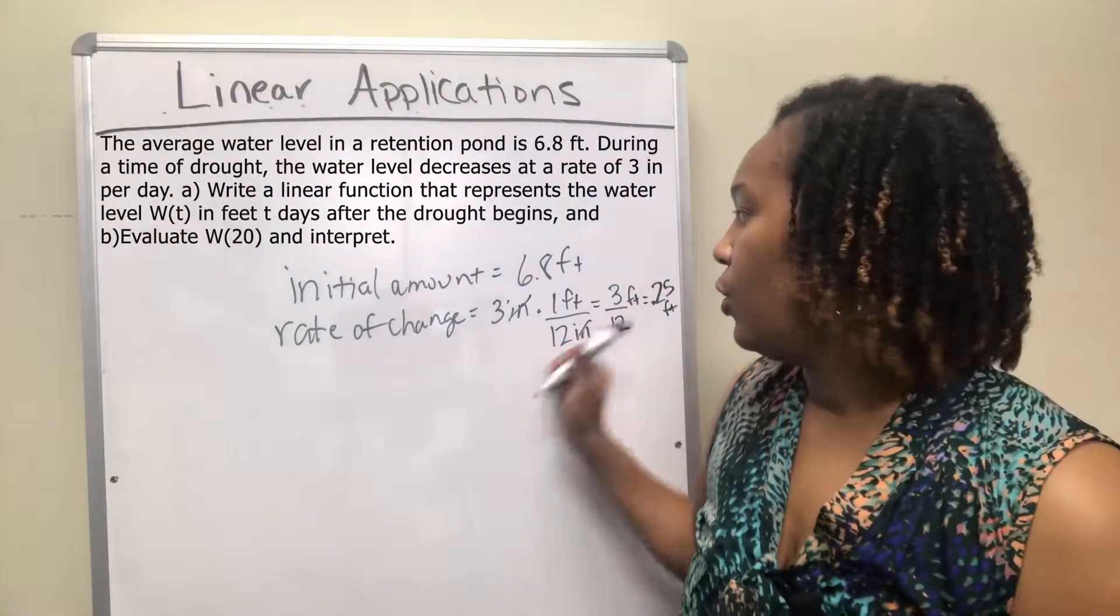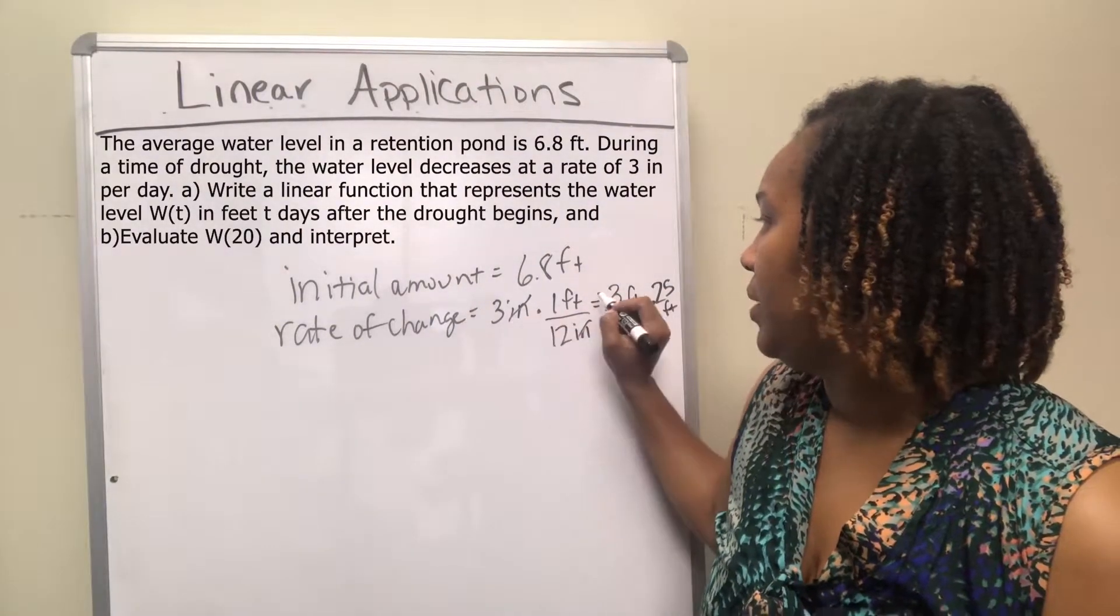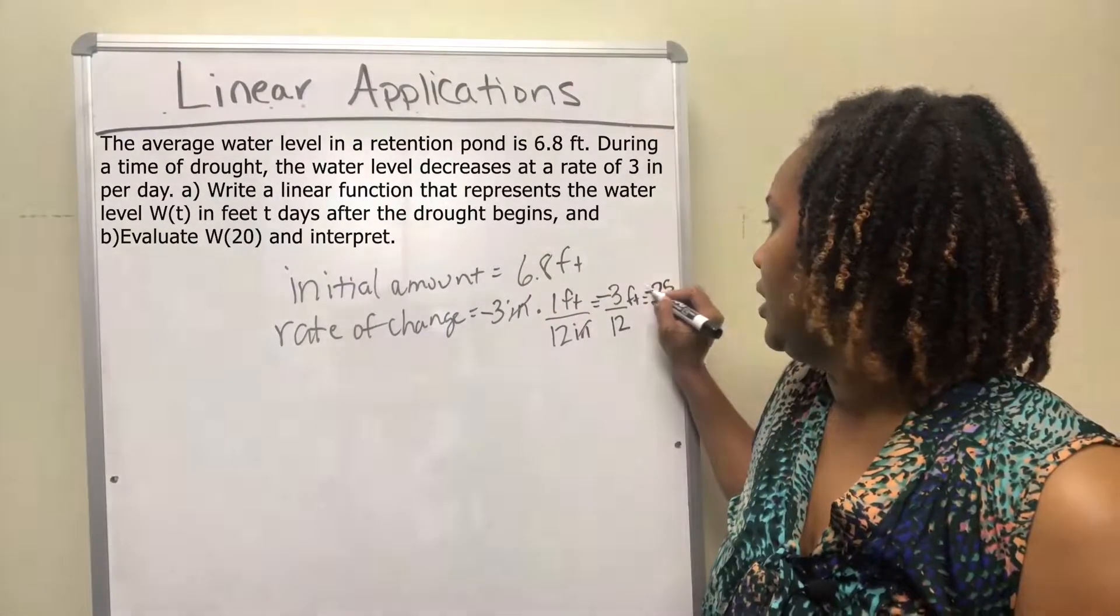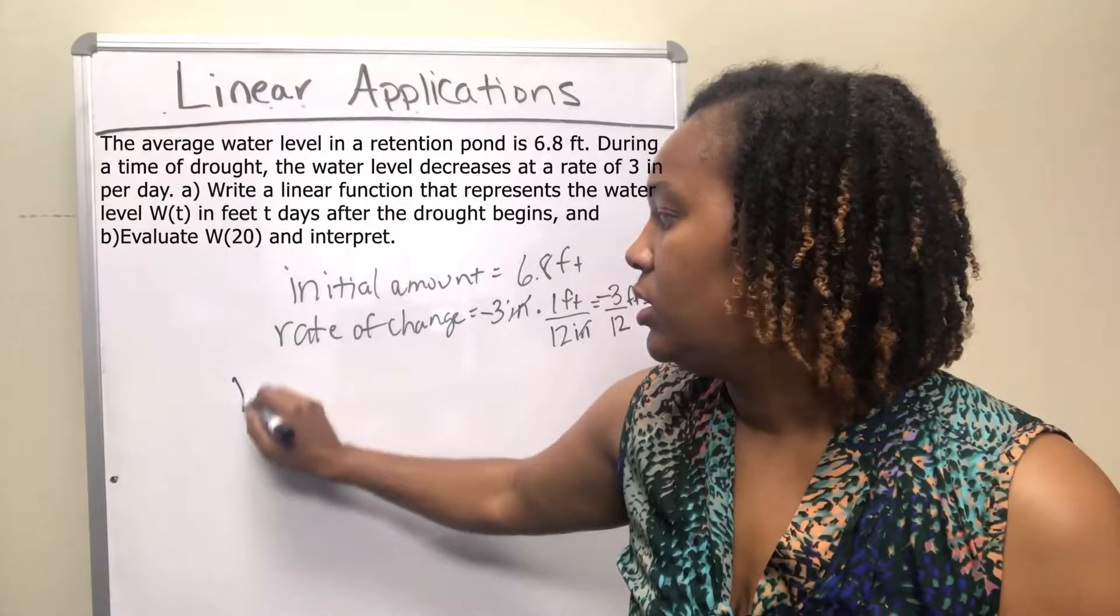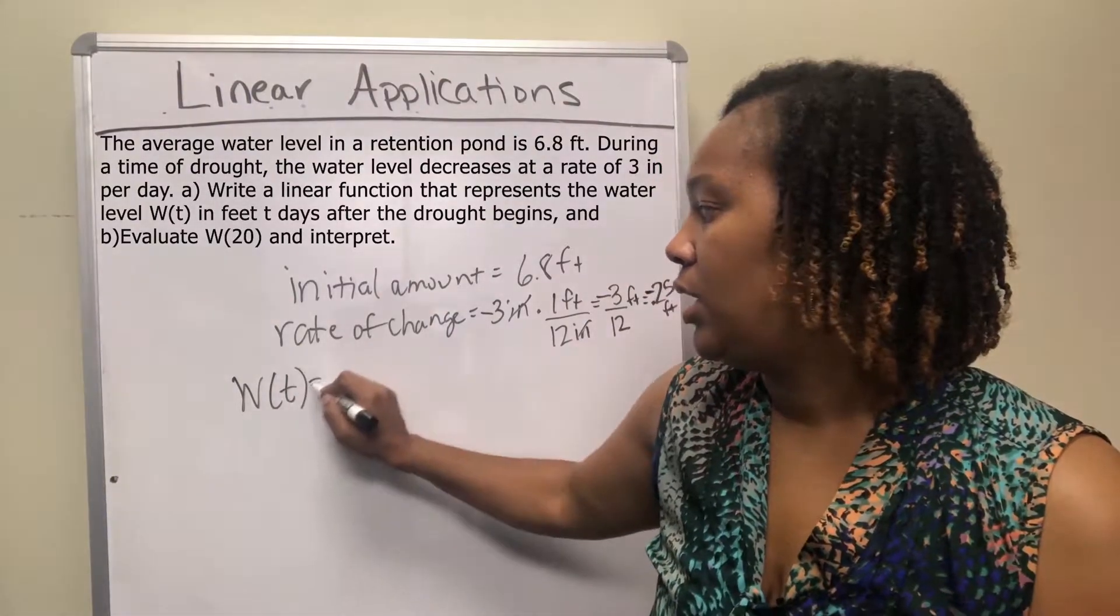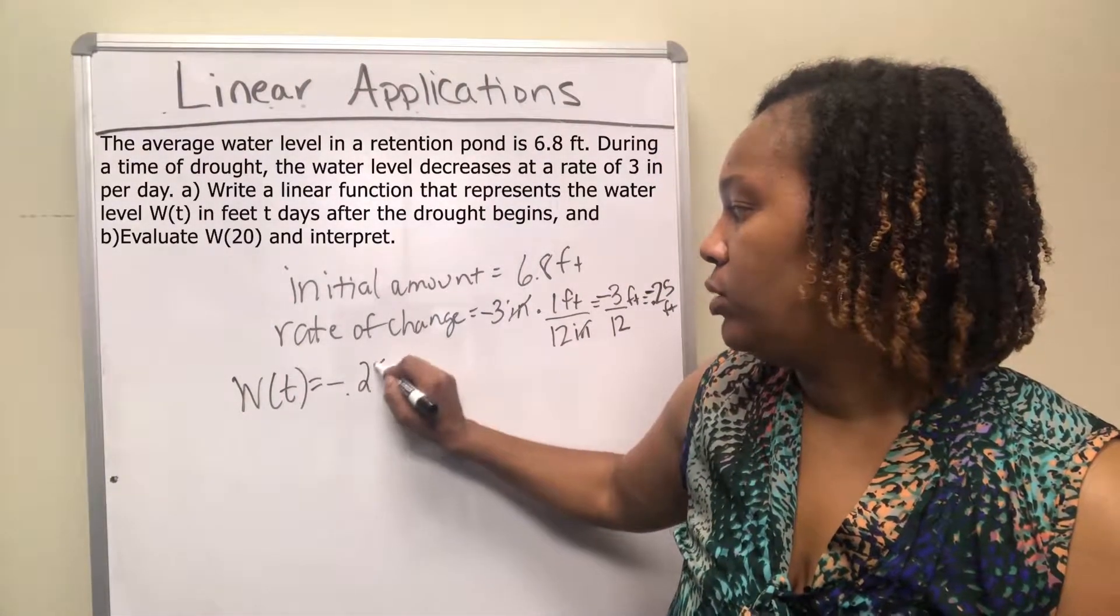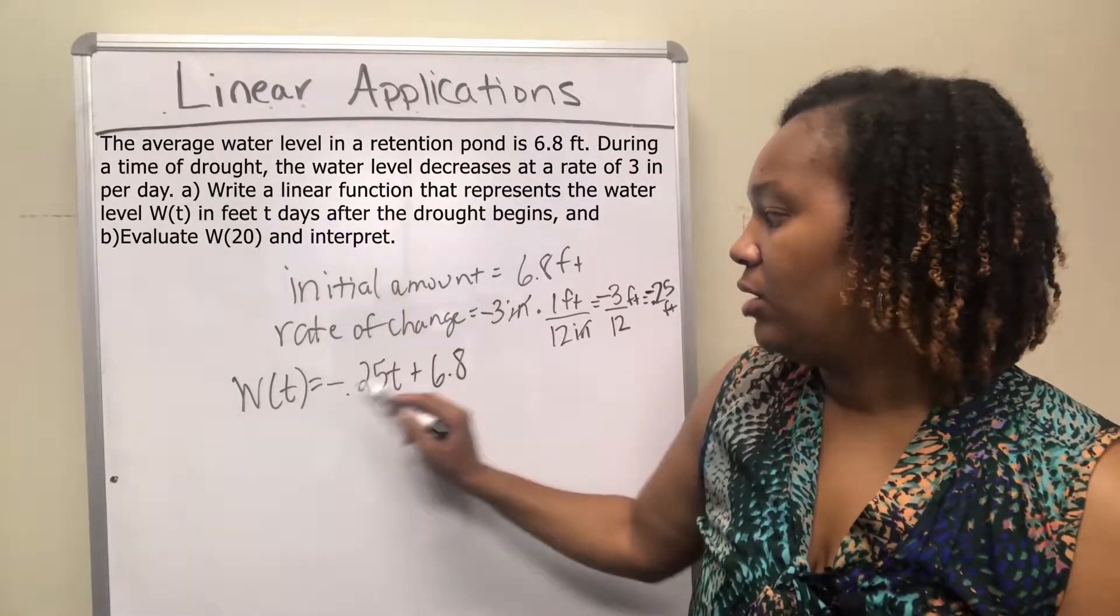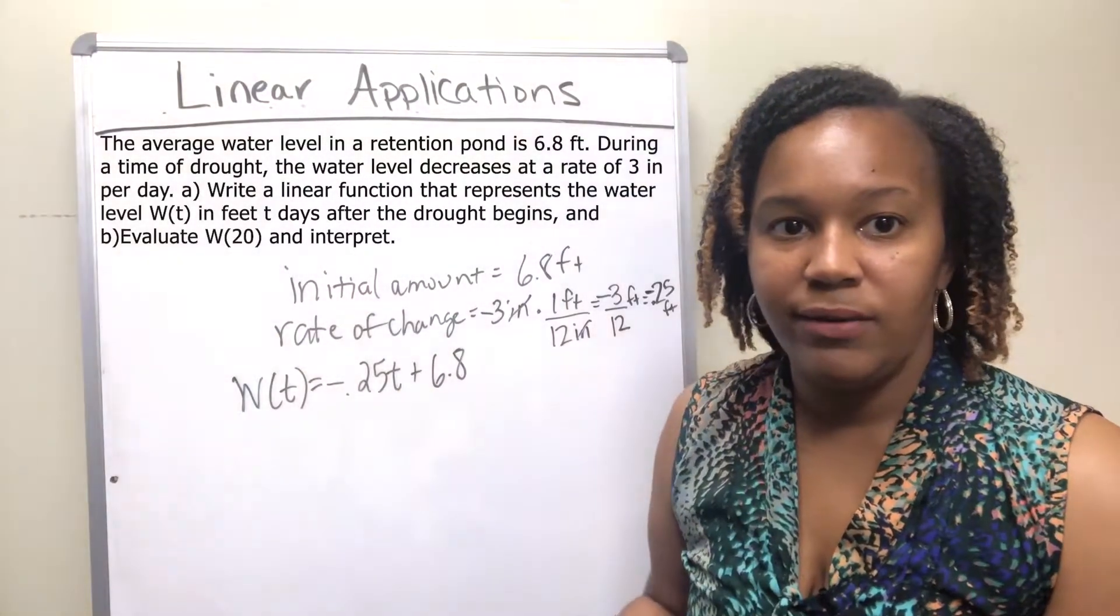And so your rate of change is going to be, and that's going to be a negative because it's actually decreasing, so that's a negative 0.25 feet. So your equation W of T will be equal to negative 0.25 T plus 6.8. And so now both of those are in terms of feet. So this will be your equation.